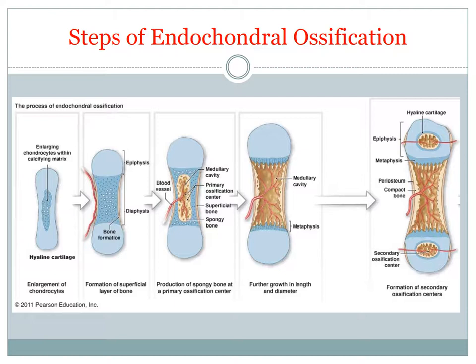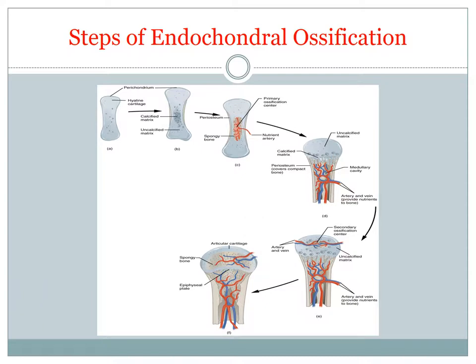As the primary ossification center enlarges, osteoclasts break down newly formed spongy bone and open up a medullary cavity in the center of the shaft. The osseous tissue of the outer shaft becomes thicker, forming compact bone. Then secondary ossification centers appear at the opposite ends of the bone. The cartilage in this region calcifies and deteriorates, forming cavities that allow entry of the periosteal bud. Soon the epiphyses are filled with spongy bone. This spongy bone is not broken down during the remodeling process. Here you can see further the steps of endochondral ossification.